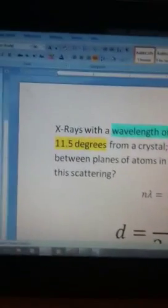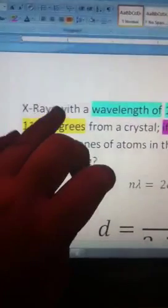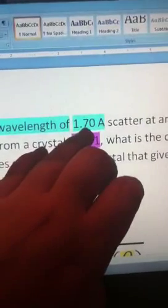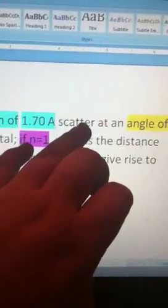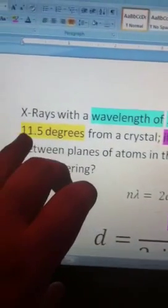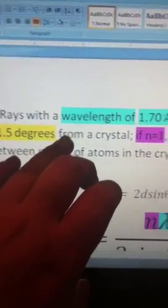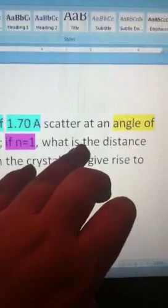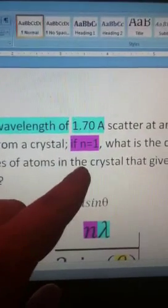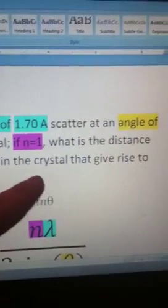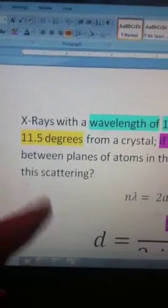So, reading this, it says, x-rays with a wavelength of 1.70 angstroms scatter at an angle of 11.5 degrees from a crystal. If n equals 1, what is the distance between planes of atoms in the crystal that gave rise to the scattering?